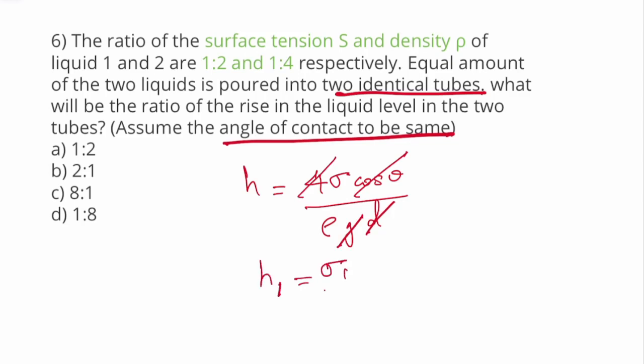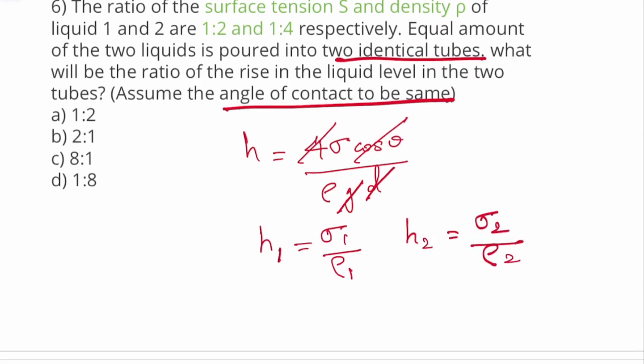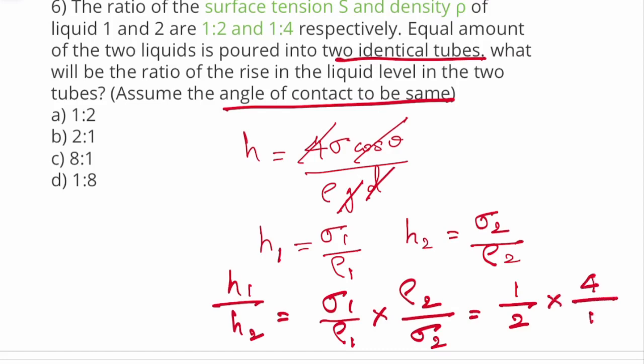Using the formula 4s cos theta divided by ρgd, since angle of contact is same, tubes are identical, diameter is same, acceleration due to gravity is same, h is proportional to s by ρ. So h1 by h2 equals s1/ρ1 divided by s2/ρ2, which equals 1/2 divided by 1/4, equals 2/1. So the ratio will be 2:1.